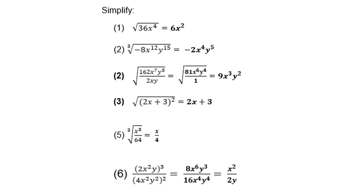For number 6: (2x squared y) cubed divided by (4x squared y squared) all squared — first get rid of the brackets. Remember it is 2 to the power 3, which is 8, not 6. So you get 8x to the power 6 y to the power 3 over 16x to the power 4 y to the power 4. Cancel your like terms, simplify, and the answer is x squared over 2y.